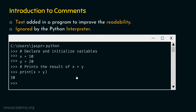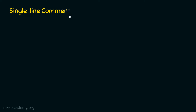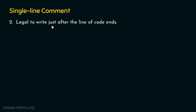With that, we are done with the introduction to comments. Let's move on to single line comments. A single line comment always starts and ends in the same line — for example, the comments we wrote before are both single line comments. The second point is that it is also legal to write a single line comment just after a line of code ends, so it is not mandatory that a single line comment always takes its own line.